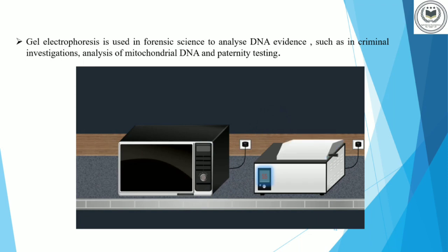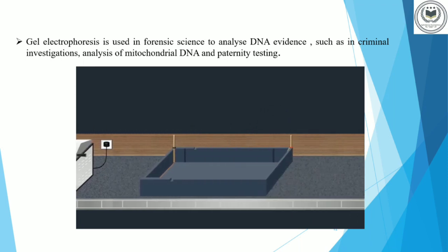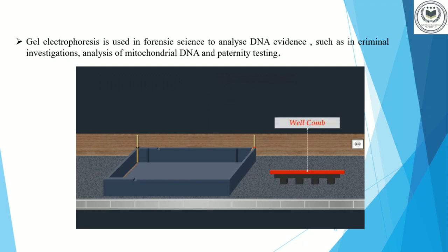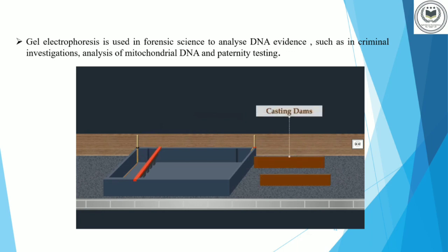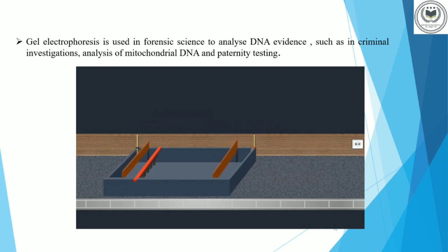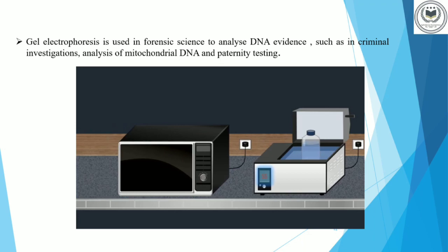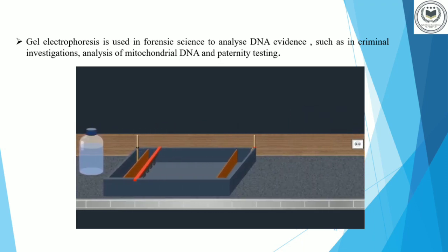While the agarose solution is cooling, an electrophoresis tank with a negative electrode and a positive electrode is prepared for gel casting. A comb is placed in the tank to create wells for loading samples. Then casting dams are fixed in the tank so that the agarose solution does not flow out during setting. Once cooled to about 55 degrees Celsius, and before pouring into the electrophoresis tank, ethidium bromide is added.